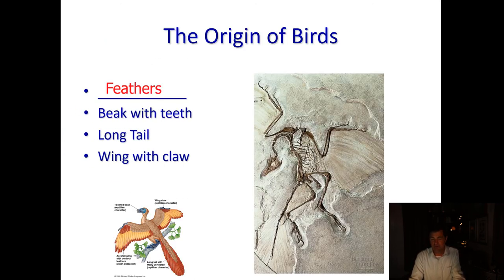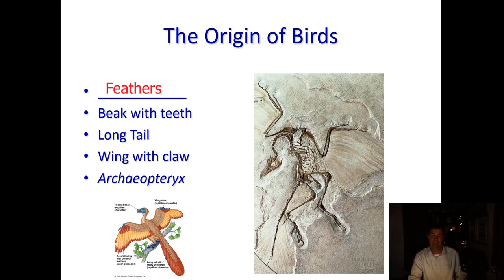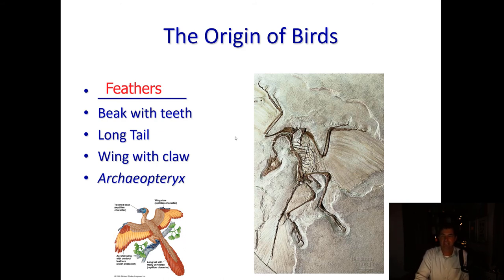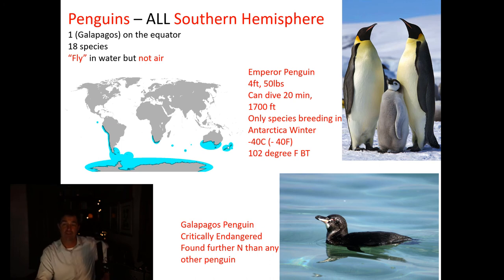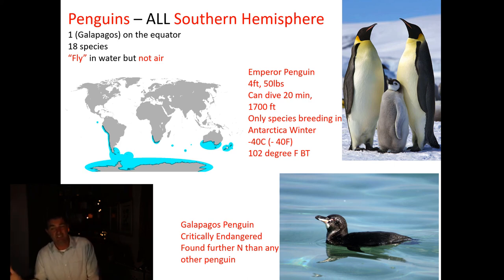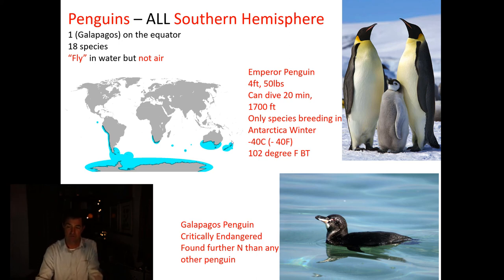When you look at the origin of birds, birds evolved from reptiles and probably were not flying birds at first — they were probably more like gliders. One example is the very famous fossil Archaeopteryx, which is part reptile, part bird, and has some features of both. This gives you an idea that probably the first birds had feathers but weren't actually flying. In fact, we'll talk about those first — and those are penguins. Penguins are all found in the Southern Hemisphere. There are 18 different species, but only one is found near the equator at all, and that is the Galapagos penguin, which is critically endangered.